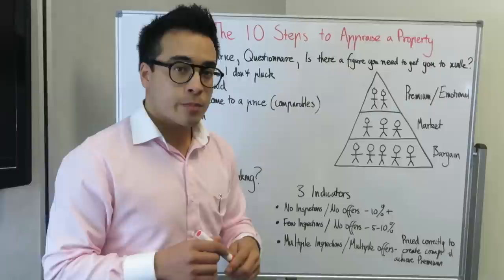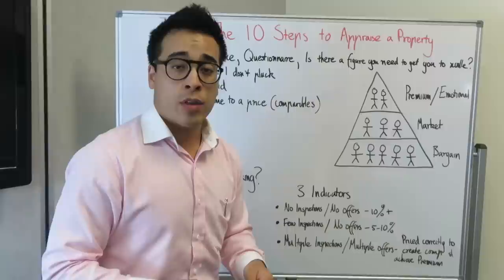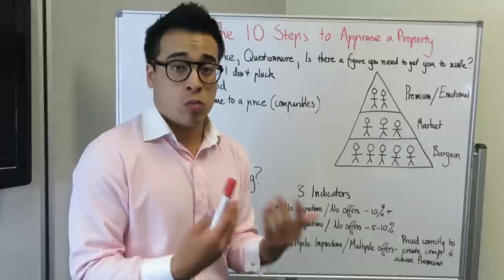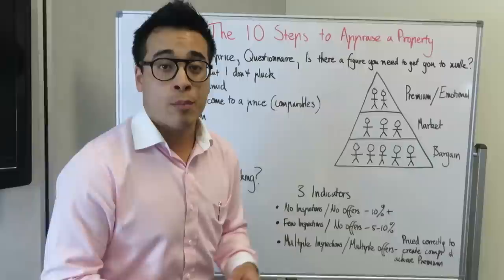What is that price? You might ask: Mr. Vendor, are you thinking about putting the property up for sale? They might say, yeah, we're thinking about putting it up for sale if the price is right. And if the price is right, what will that enable you to do? It'll get me here to allow me to do this. What is that price that will allow you to do that? So there are three ways you can understand where the vendor sees their house worth before you go into pricing.